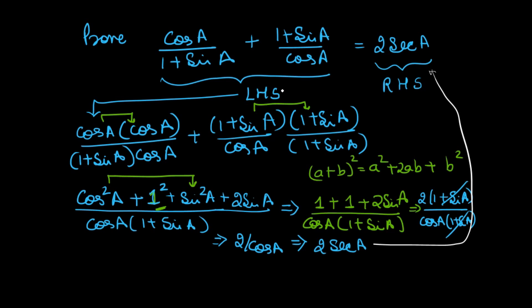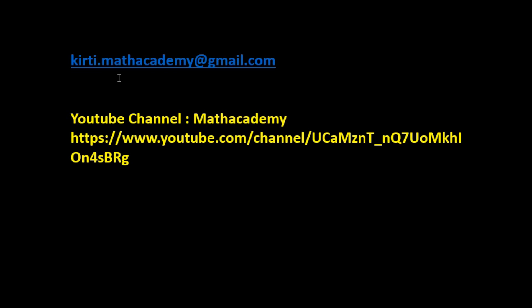So we have proved the left-hand side equals the right-hand side, and hence proved this trigonometric identity. I hope these examples are clear and you understand how to use trigonometric identities. If you need more questions or have any doubts, you can send an email to keerti.mathacademy@gmail.com. Subscribe to the Math Academy YouTube channel if you liked these videos. Thank you.